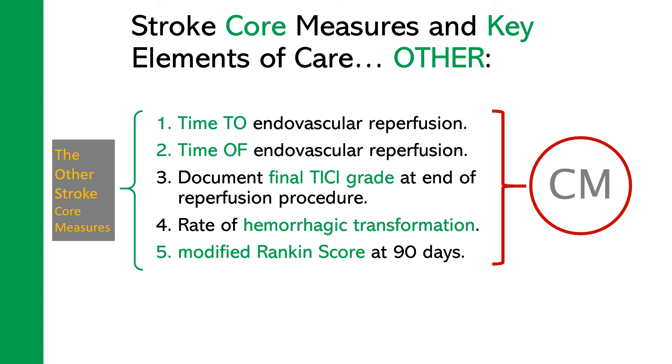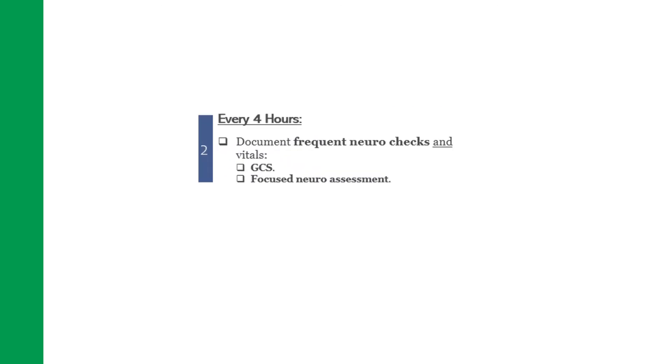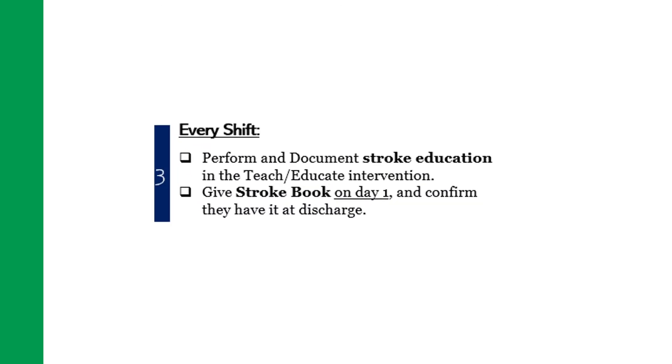Other core measures and key stroke elements of care include time to endovascular reperfusion, documentation of the final arterial blood flow grade at the end of the endovascular procedure, the rate of hemorrhagic transformation, and the modified Rankin Score at 90 days. Checklists help increase patient safety. A stroke patient checklist has been developed and is available at the bedside to guide, remind, and assure that appropriate steps are being done. On the checklist you will find steps to be done on admission, such as documentation of the NIH Stroke Score, applying SEDs for VTE prophylaxis, keeping the patient fully NPO until the swallowing screen has been done and documented, and whether aspirin has been ordered either PO or rectally.